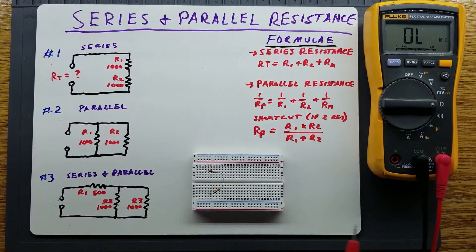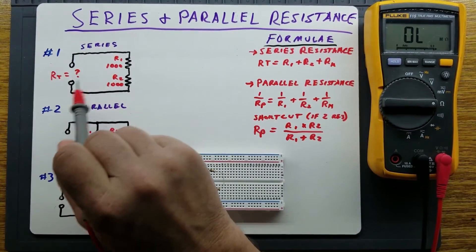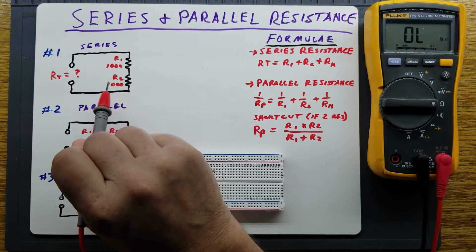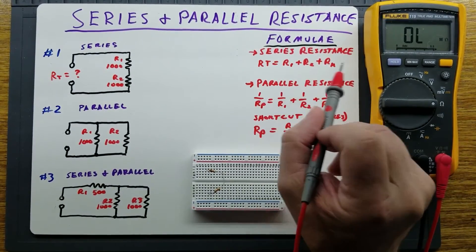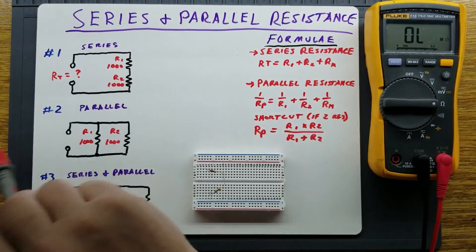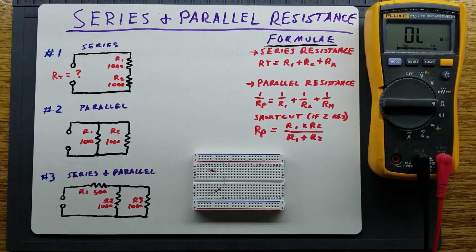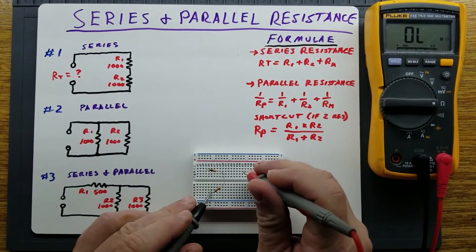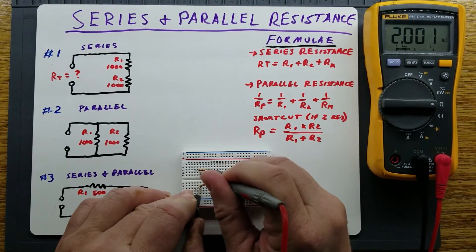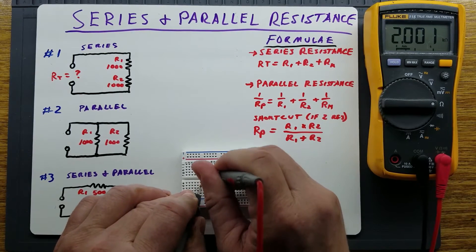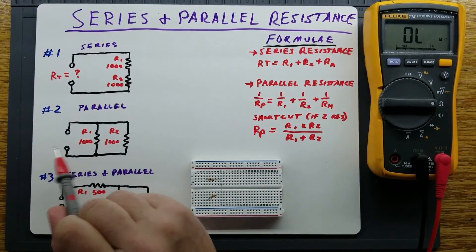In this example, we have two 1,000-ohm resistors in series. The total resistance is R1 plus R2, which in this case would just be 2,000 ohms. We happen to have two 1,000-ohm resistors in series, and measuring them gives us 2,000 ohms, which is what we expected.